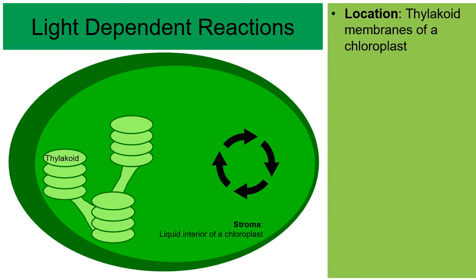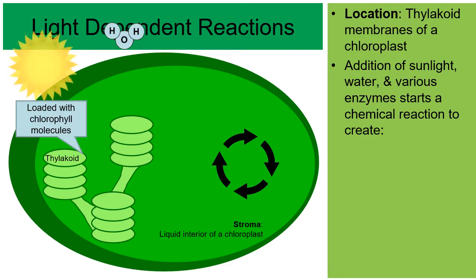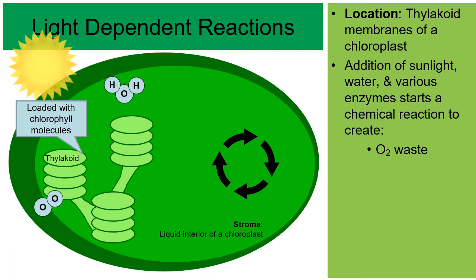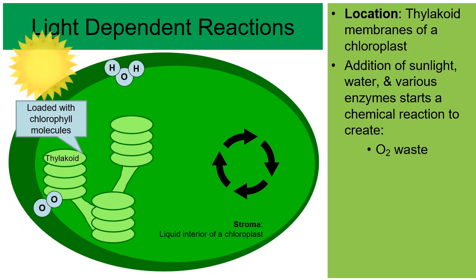For the light-dependent reactions, the location is the membrane of a thylakoid, because those membranes are loaded with chlorophyll molecules. Chlorophyll is the molecule that actually absorbs sunlight. With the addition of sunlight, water (H₂O), and various enzymes, a chemical reaction known as the light-dependent reactions begins. In the process, oxygen waste is created — the oxygen atoms actually come from the water molecule being broken down.